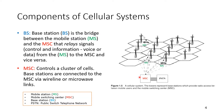The Mobile Switching Center controls a cluster of cells. Base stations are connected to the MSC via fiber optics or microwave links. The MSC in turn is connected to the Public Switched Telephone Network (PSTN), which includes landlines and other telephone networks. So the four components are: MS, BS, MSC, and PSTN.